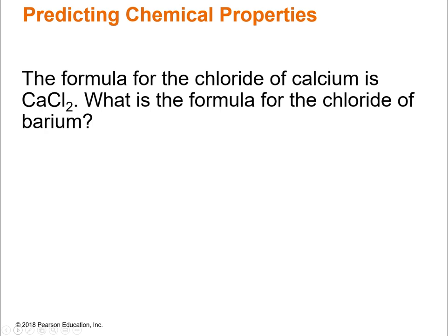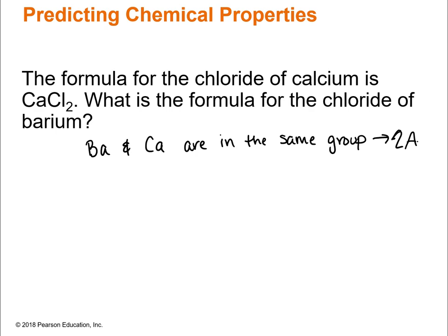Let's do a little practice. The formula for the chloride of calcium is CaCl₂. What is the formula for the chloride of barium? Find barium on the periodic table and you'll notice that barium and calcium are in the same group — group 2A. Since the formula for calcium chloride is CaCl₂, the formula for barium chloride should be BaCl₂. I could give you any element in group 2A and ask for the formula of its chloride, and you should be able to give it because they're all the same.